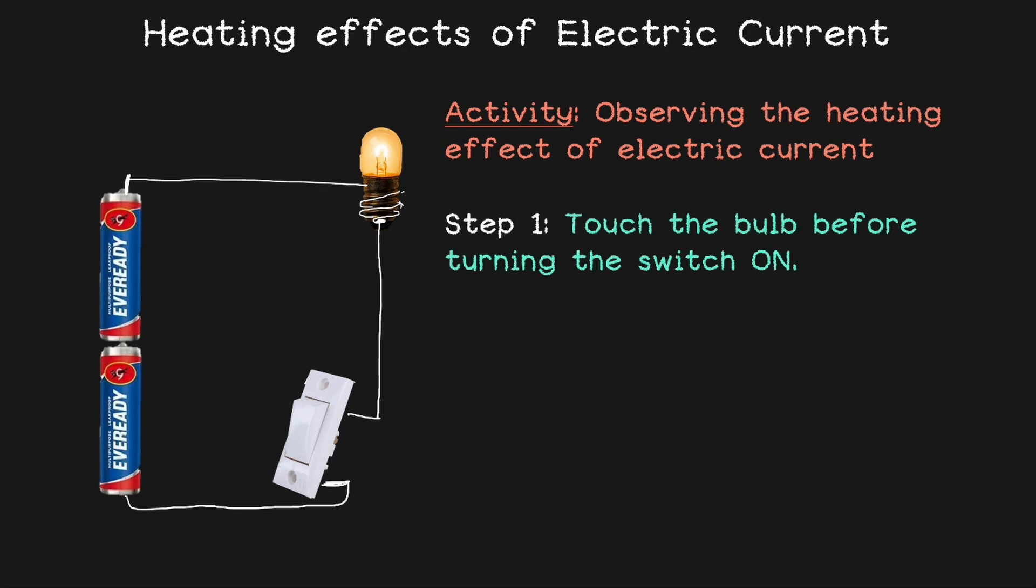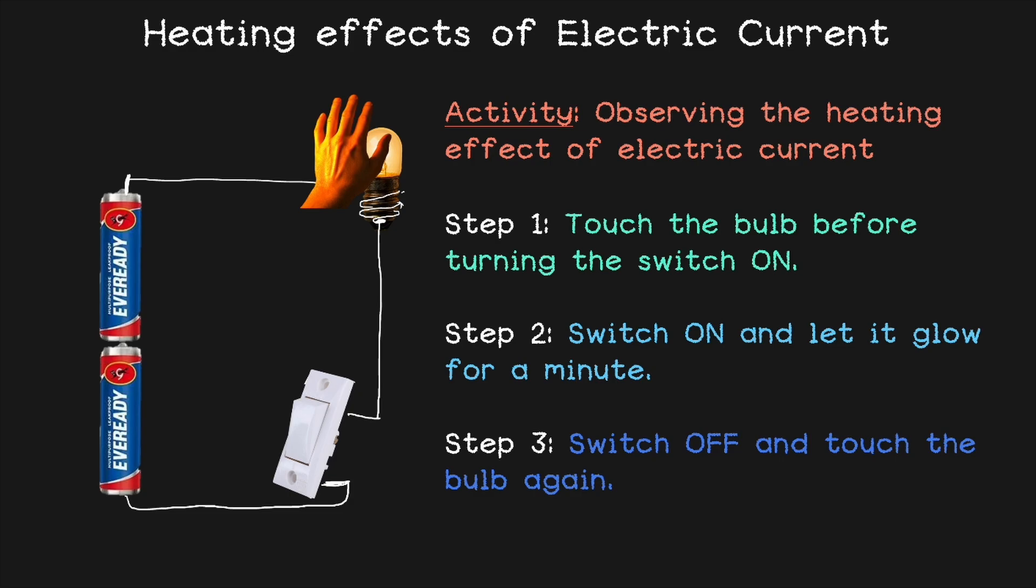You can start with touching the bulb before turning on the switch. As step two, you have to switch on and let the bulb glow for around one minute. When you switch off the bulb after a minute, you touch the bulb again. Did it feel warmer? That's the heating effect in action. The current passed through the filament and heated it up.